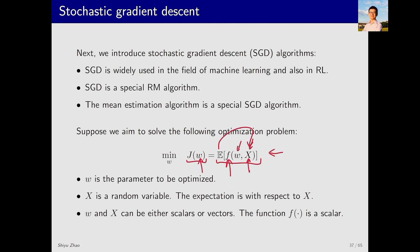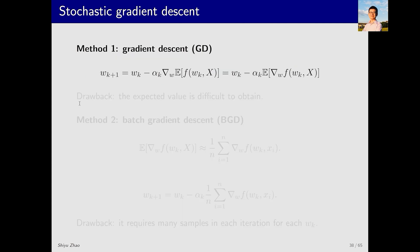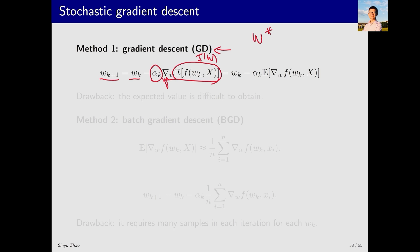Our goal is to find the optimal W that minimizes this objective function. There are multiple methods to solve this optimization problem; we will introduce three closely related methods. The first method is gradient descent, abbreviated as GD. Since our goal is to minimize an objective function, we use gradient descent. Suppose the optimal solution is W-star. At iteration K we have an estimate W_K; at iteration K+1 we improve upon W_K. By calculating the gradient of J(W) and descending along the gradient direction, we can decrease the value of the objective function. The parameter alpha_K is called the step size, controlling how fast it descends.